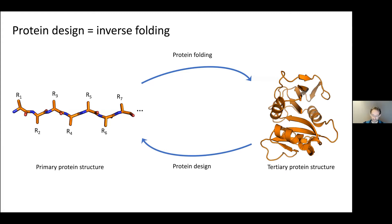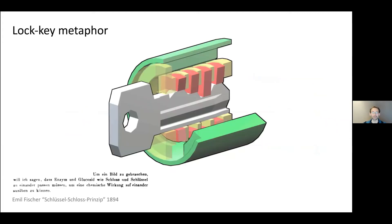Proteins are usually targets for drug therapies, and we want to build or understand how a protein binds to something else. A good metaphor is the lock-and-key metaphor from Emil Fischer, a Nobel laureate who lived more than 100 years ago. He compared the interaction of proteins and biomolecules to a lock and key — there is a complementary geometric shape that enables it to open. But it's way more complicated because it's not only the geometric structure, it's also chemical and physical properties.